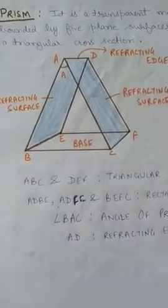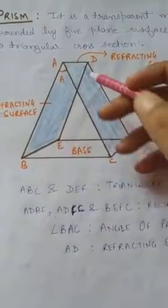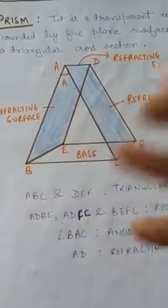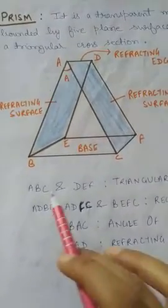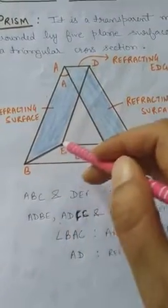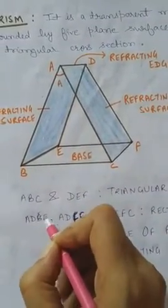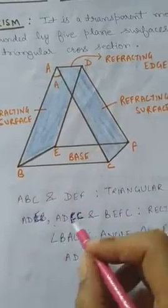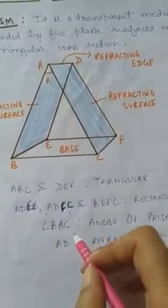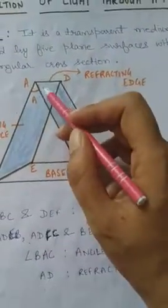Whenever a ray diagram is given, only the principal section ABC is drawn, and we represent how refraction takes place on this part. ABC and DEF are the triangular surfaces. ADEB and ADFC and BEFC are the rectangular surfaces. BAC is the angle of the prism and AD is the refracting edge.